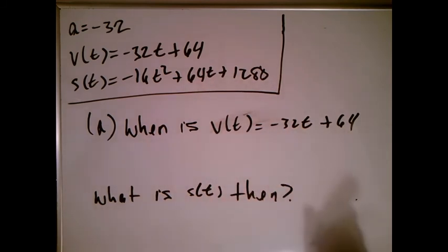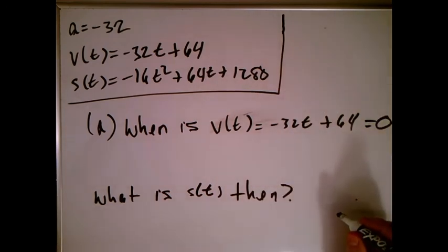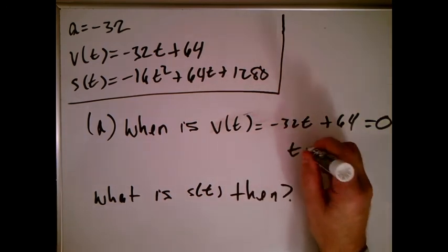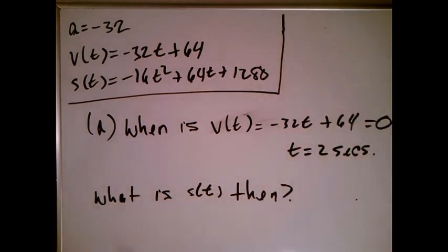You see, I didn't leave myself much space here, but all I want to know is when the velocity is equal to zero. Well, to solve that for t, I get t equals two seconds. So we know at the two-second mark that ball is at the very height, which by the way is very hard to do without calculus.